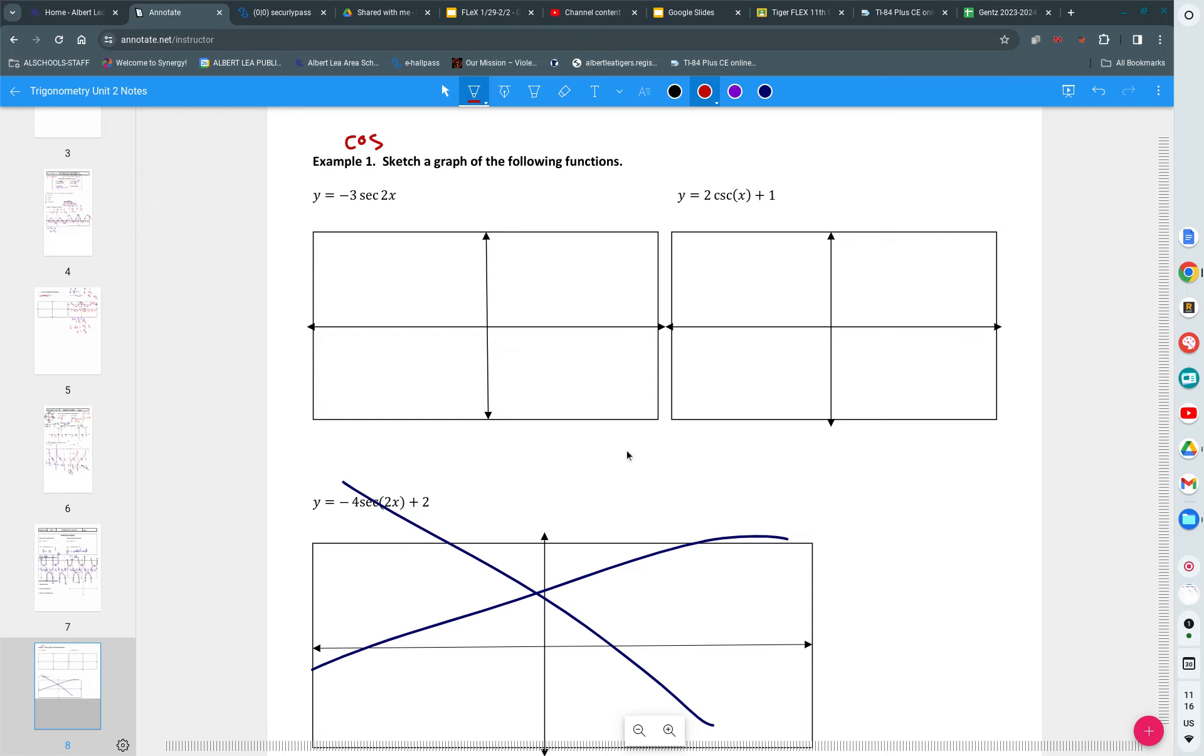Cosine is the reciprocal of the secant. So I can see here that the amplitude is three, and I can see that the period is going to be two pi divided by what? Two. And we get pi. So I'm going to mark off pi, and pi over two, and pi over four, and three pi over four, negative pi, negative pi over two, negative pi over four, negative three pi over four.